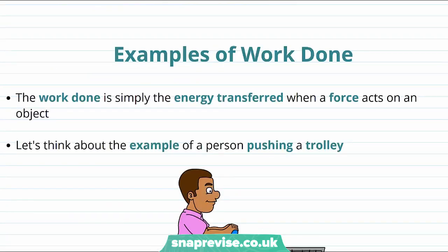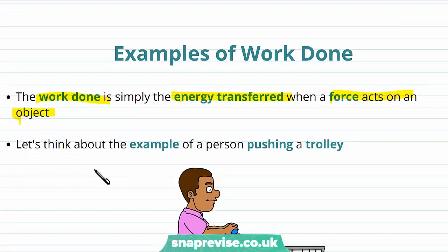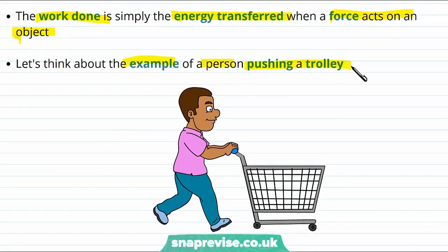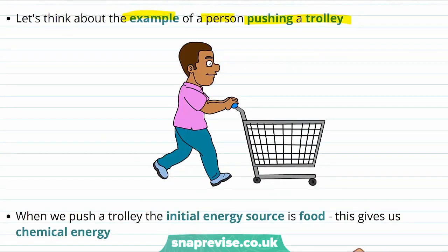Now let's take a look at some real life examples of work being done. And remember the work done is simply the energy transferred when a force acts on an object. Let's start by thinking about the example of a person pushing a trolley. Let's go right back to the start and talk about all of the energy transfers that have led to eventually the person being able to push the trolley. Well the initial energy source was food.